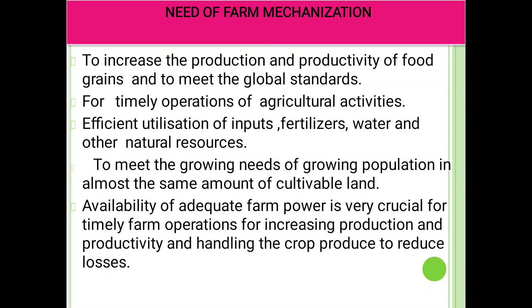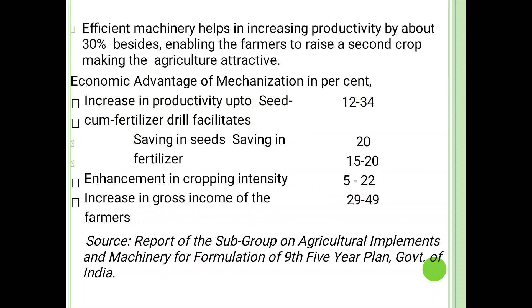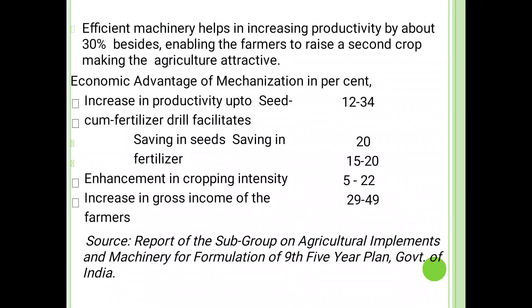Need of farm mechanization: to increase the production and productivity of food grains, and to meet the global standard for timely operation of agriculture activity. Efficient utilization of inputs such as fertilizer, water and other natural resources. To meet the growing needs of the growing population with almost the same amount of cultivable land. Availability of adequate farm power is very crucial for timely farm operation for increasing production and productivity and handling the crop produce to reduce losses. Efficient machinery helps in increasing productivity by about 30%, besides enabling the farmer to raise a second crop and making agriculture attractive.